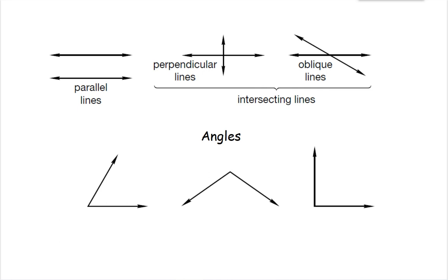Where lines intersect, angles are formed. So here I have just a bunch of different angles formed with two lines intersecting with each other.